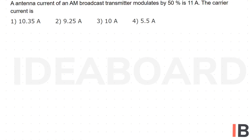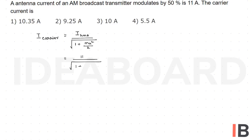Generally, the expression for carrier current is: I_carrier = I_RMS / √(1 + MA²/2). Substituting the values, this equals 11 Ampere divided by the square root of 1 plus (0.5)² divided by 2.